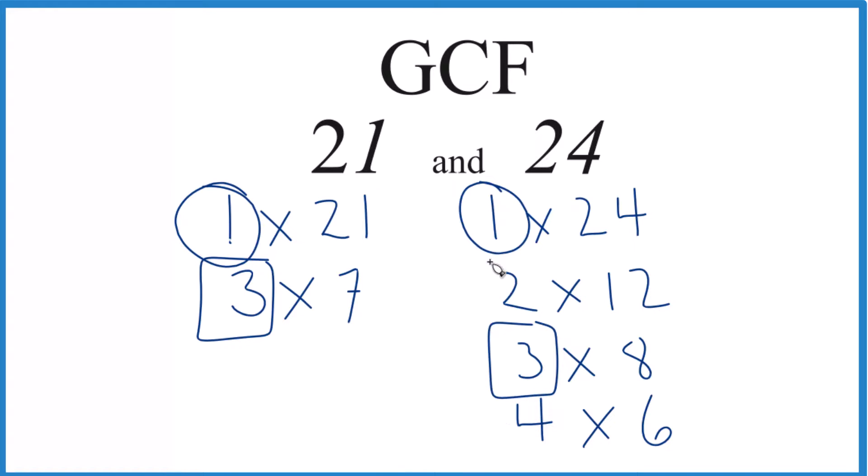And it looks like 3 is the greatest common factor. So in answer to our question, the GCF for 21 and 24 is 3.